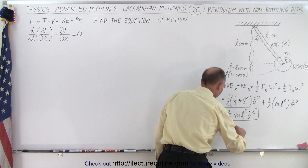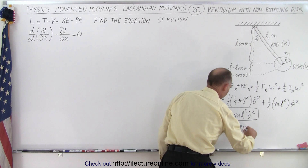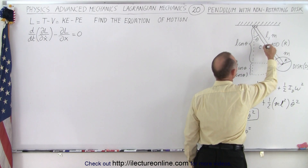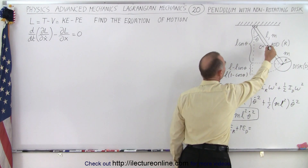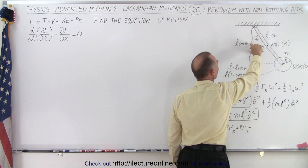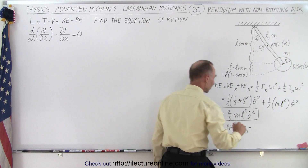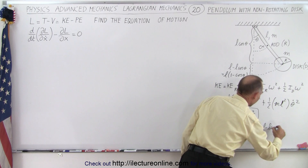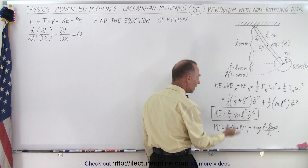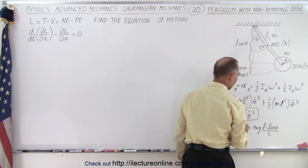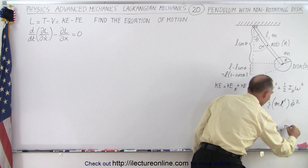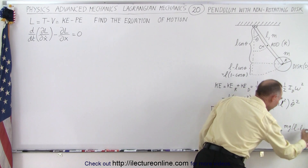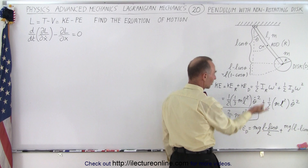Now we need to find the potential energy. The potential energy is the sum of the potential energy of the rod plus that of the disc. The center of mass of the rod is at its midpoint, so the height it rises is half of the total bar height. That gives m g times (L minus L cosine theta) divided by two for the rod's potential energy, plus m g times (L minus L cosine theta) for the disc.